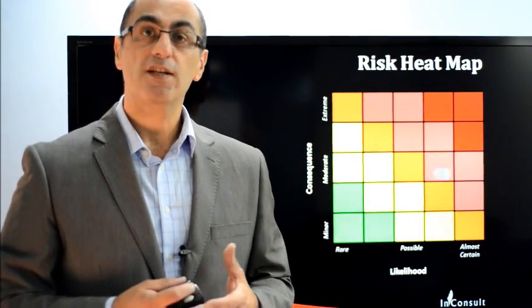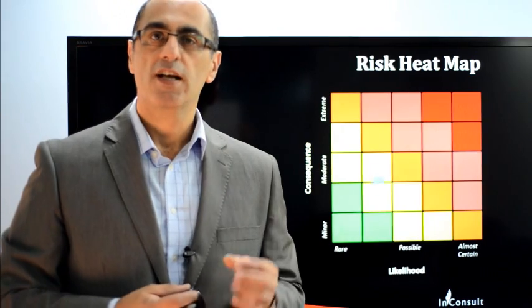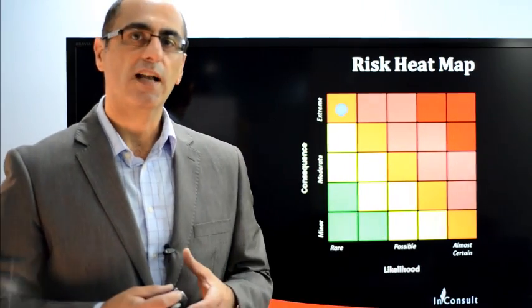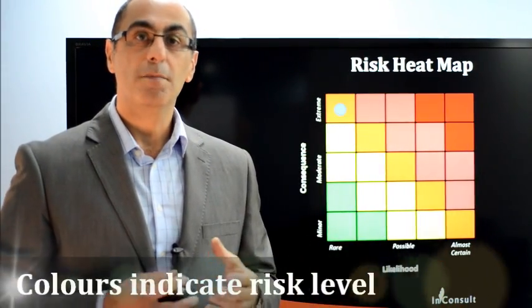A 5x5 heat map grid is divided into 25 cells, each representing different levels of risk. It's common to translate these 25 cells into four or five colors where each color means something.